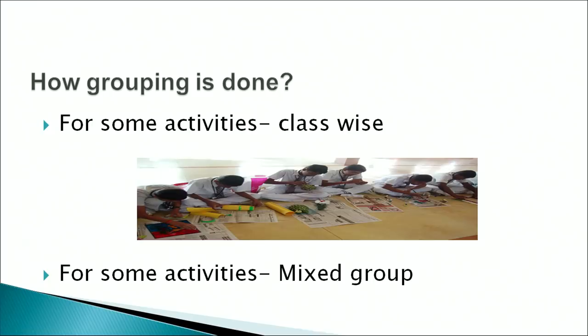Now we should know how the grouping is done in the planning and organization of work education activities. Grouping is done in two manners: for some activities, grouping is done class-wise — for example, class 3, class 4, class 5 — and for some activities, a mixed group is formed.